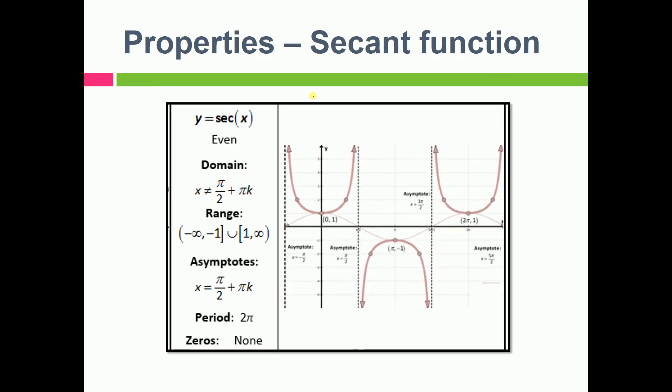So we won't be spending that much of time. So y is equal to sec x, this is the reverse of cos x. The domain, range, asymptotes, period, and of course here zero also, there are no zeros. That means this graph is not cutting this x-axis.